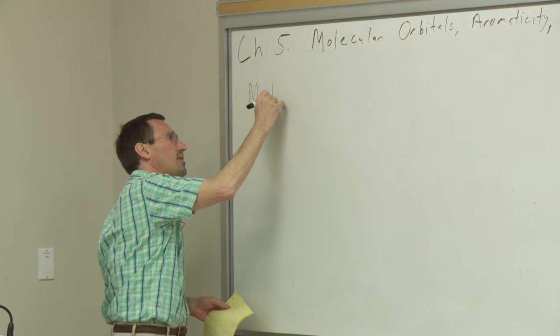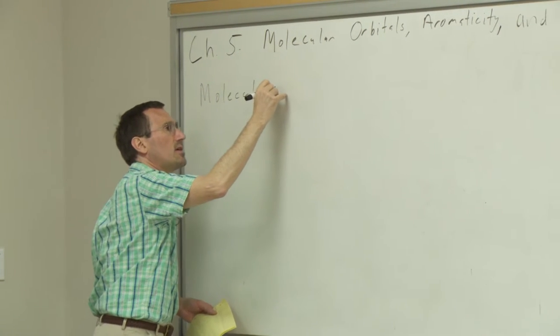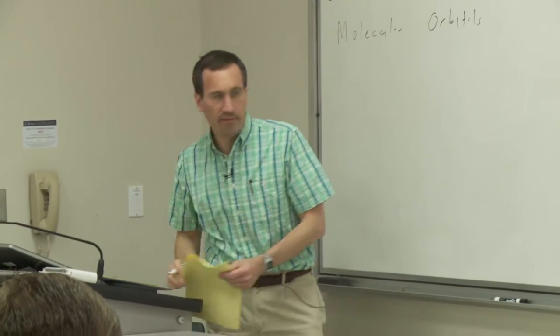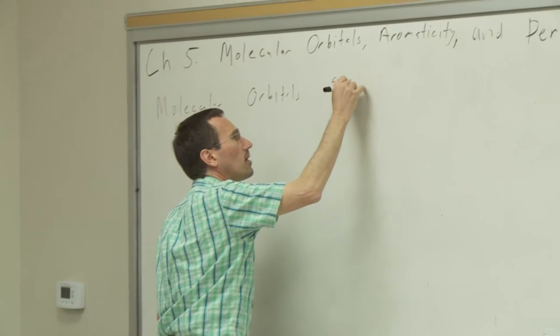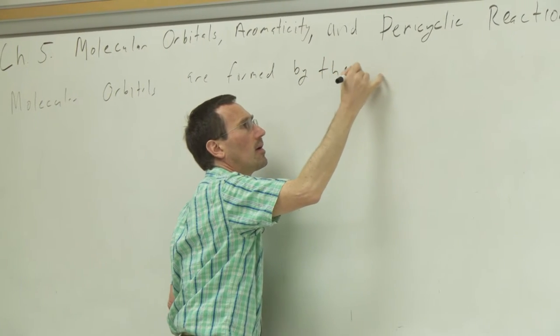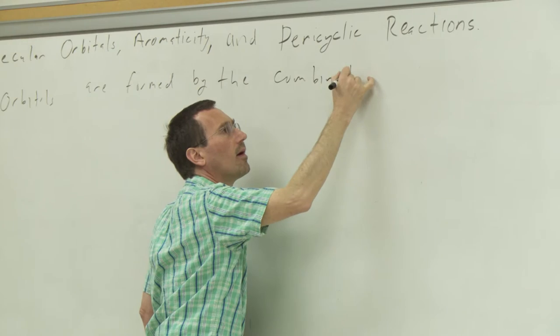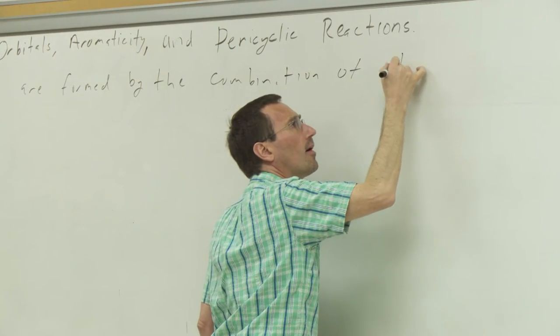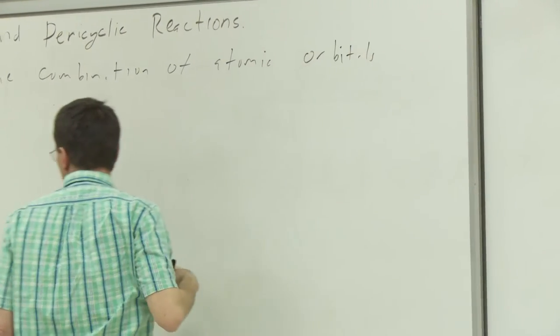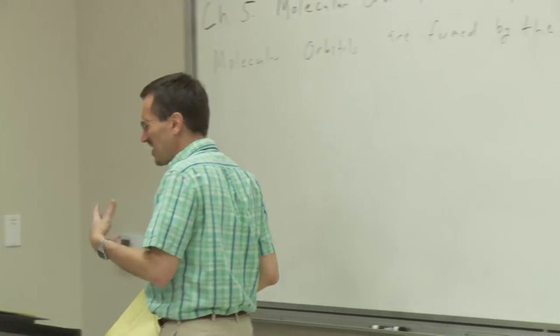The basic tenets of molecular orbital theory are that molecular orbitals are formed by the combination of atomic orbitals. So atoms have 1s, 2s, and 2p — 2px, 2py, 2pz orbitals — for hydrogen, carbon, oxygen, nitrogen, and so forth.